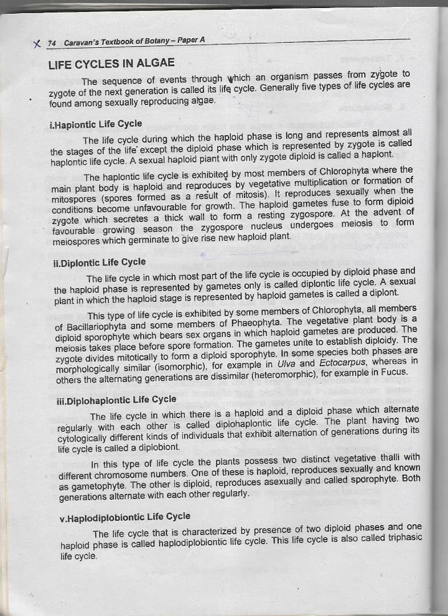A sexual plant means that there is sexual reproduction in which the haploid stage represents haploid gametes. This plant is a diplont. This type of life cycle is exhibited by some members of Chlorophyta.